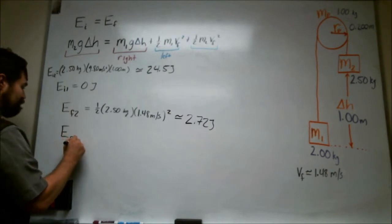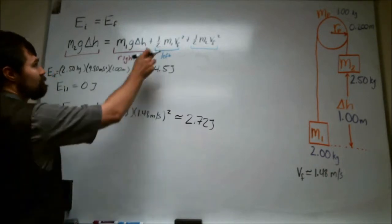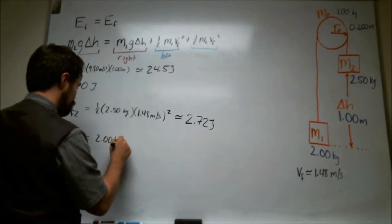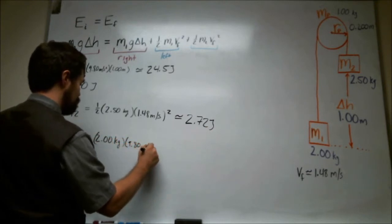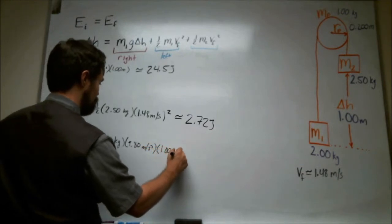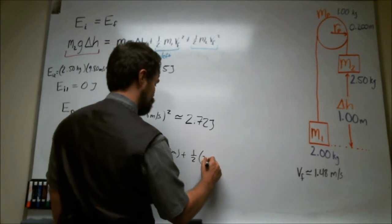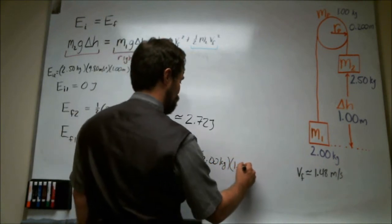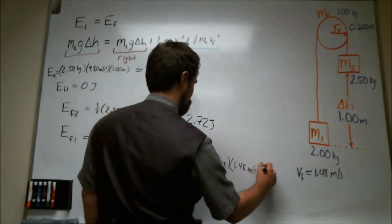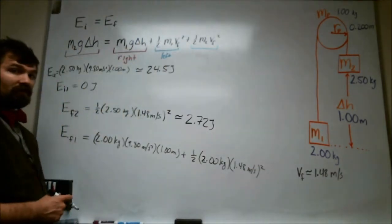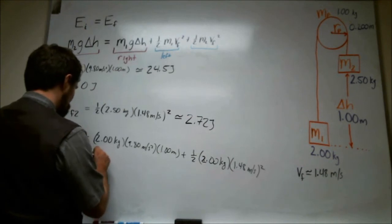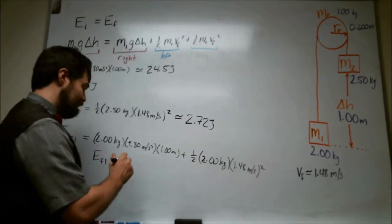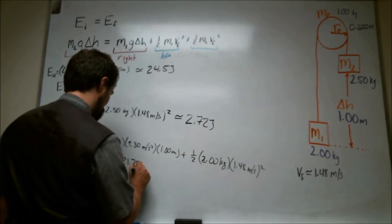And then for the final of number 1, basically we need to plug in here and plug in here. So that's going to be 2 kilograms times 9.8 meters per second squared times 1 meter plus 1/2 of 2 kilograms times V final squared. So plug in numbers for all of this and what you end up with is that E final for number 1 is approximately 21.78 joules.